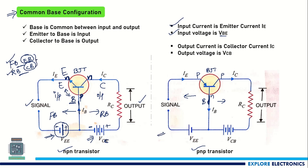Similarly, that will also be applicable for a PNP transistor operating as an amplifier. Here the P region of the emitter is connected to the positive terminal, and the N region that is the base is connected to the negative terminal, making the emitter-base junction forward biased and the collector-base junction reverse biased. This is how the external voltages VEE and VCC are connected.